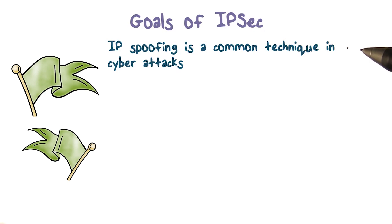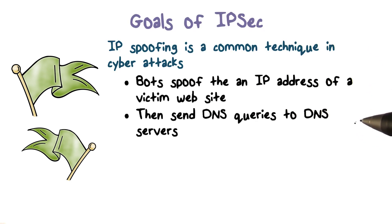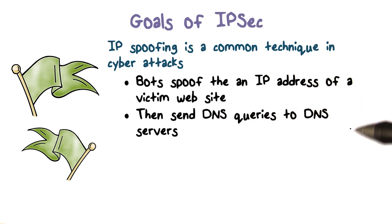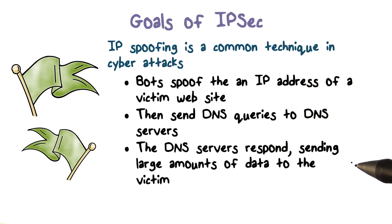As a result, IP spoofing — or forging the source IP address — is a commonly used technique in cyber attacks. For example, bots in a botnet can send a DNS query to DNS servers asking for the full TXT record of a domain, by spoofing the source IP address of a victim website. As a result, the response from the DNS servers, which can amount to a very large volume of data, is sent to the victim website.